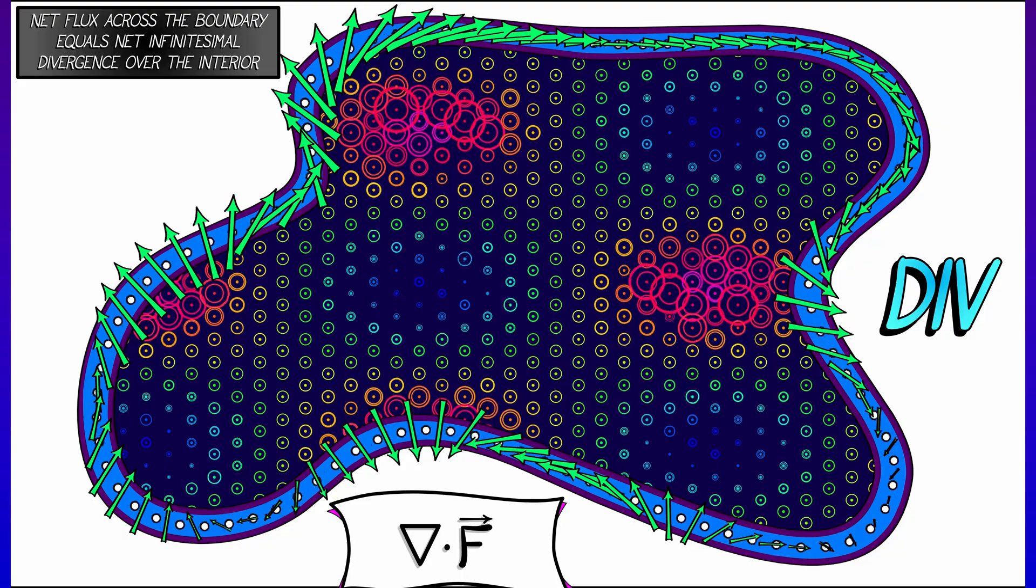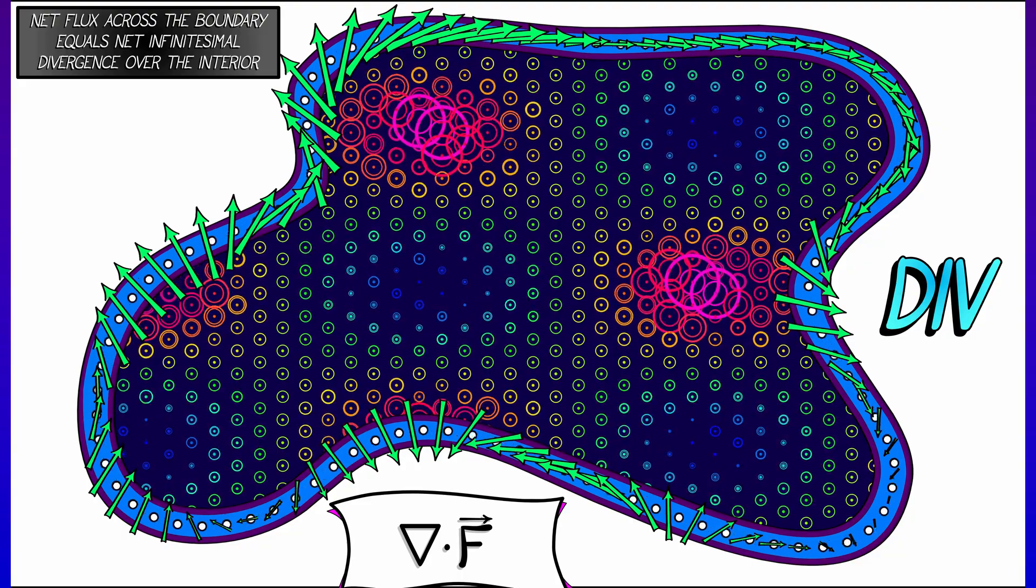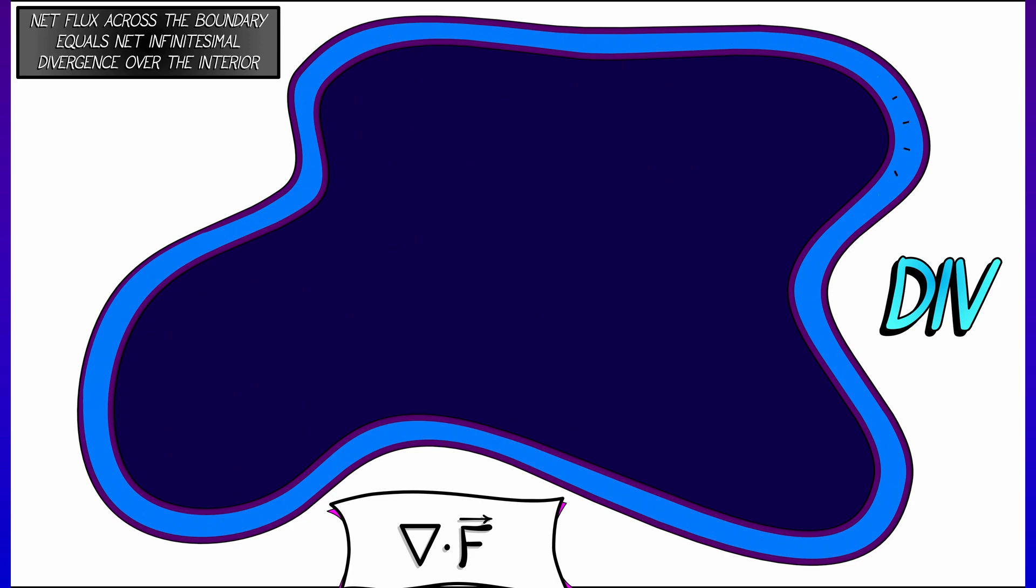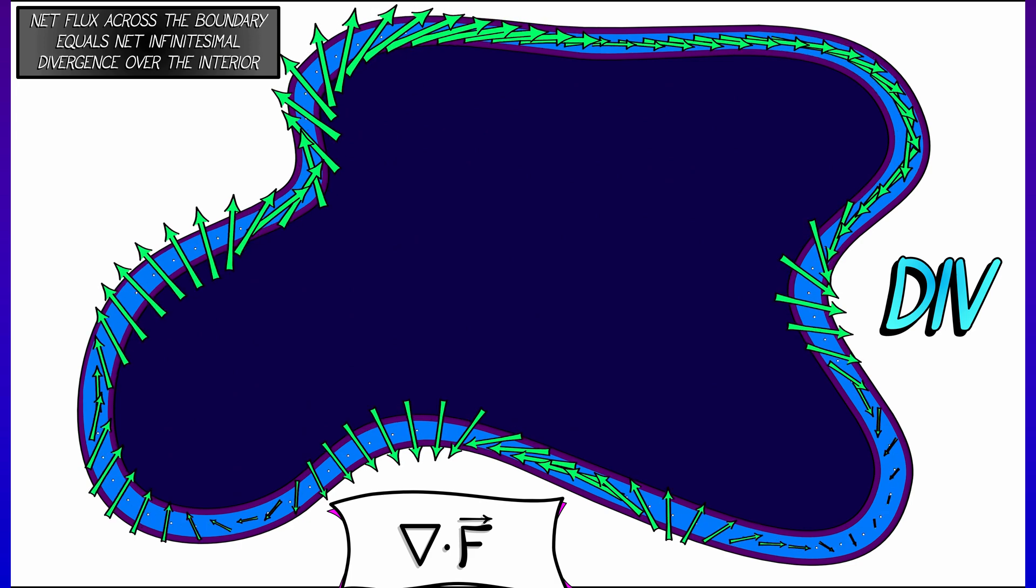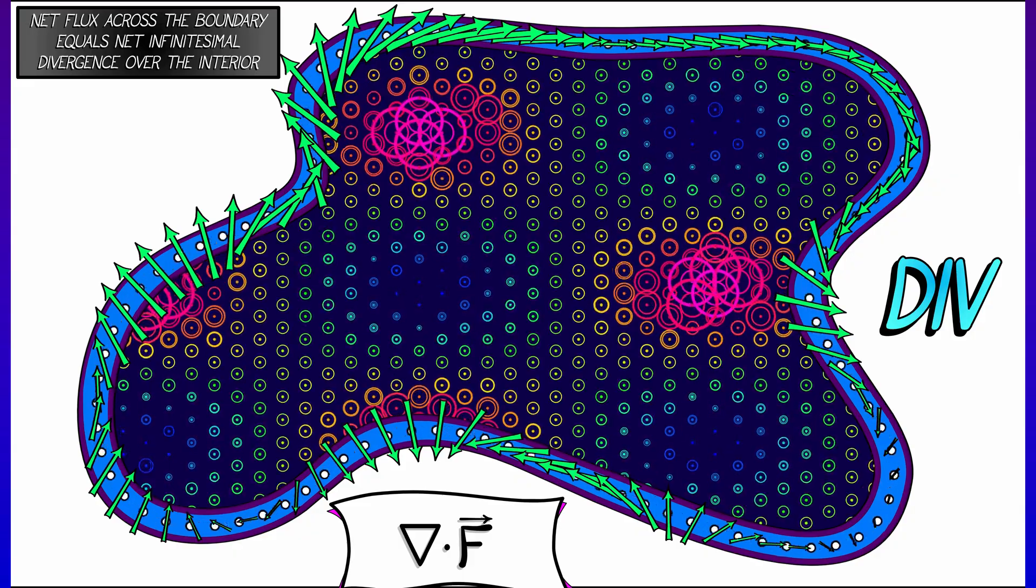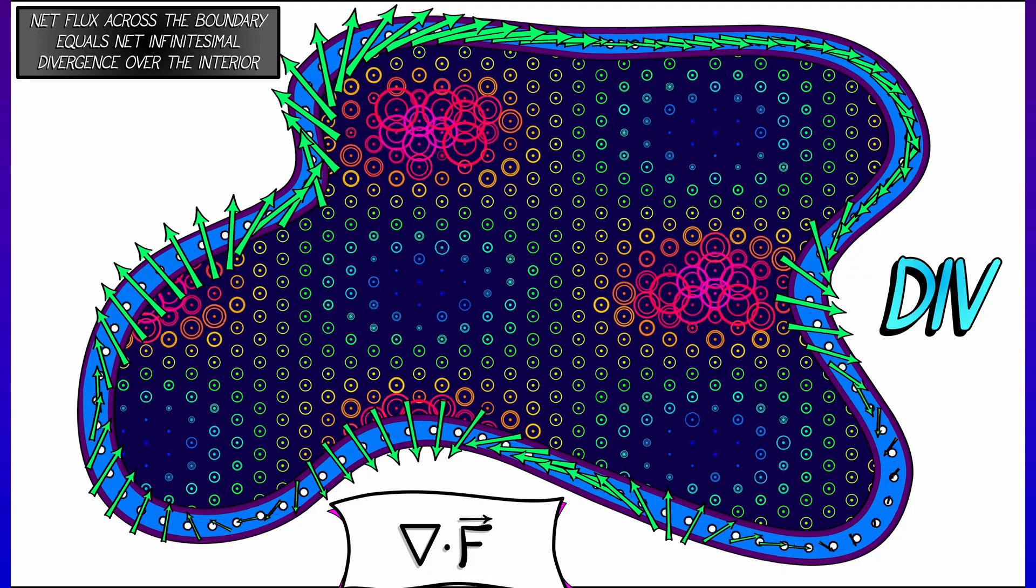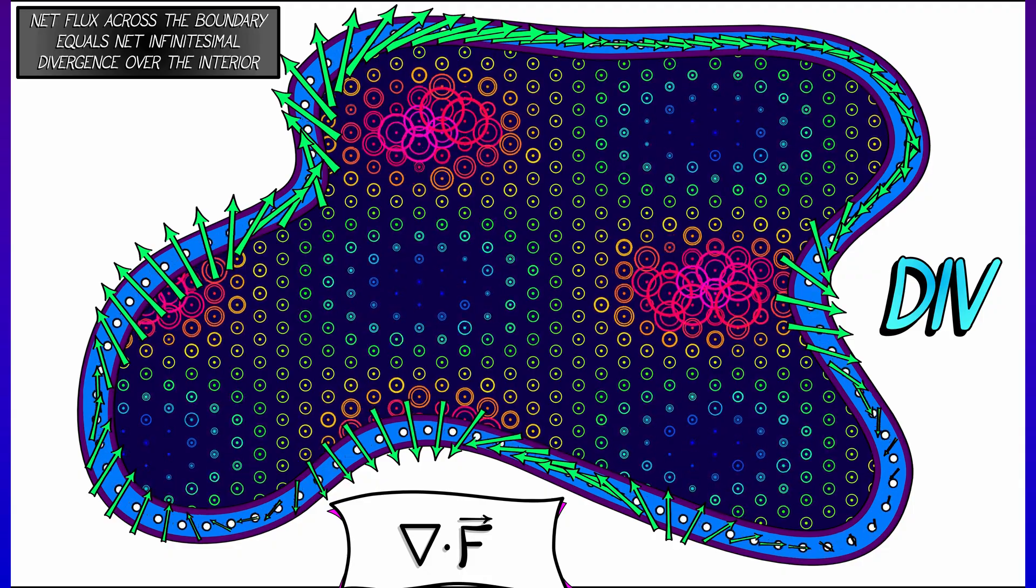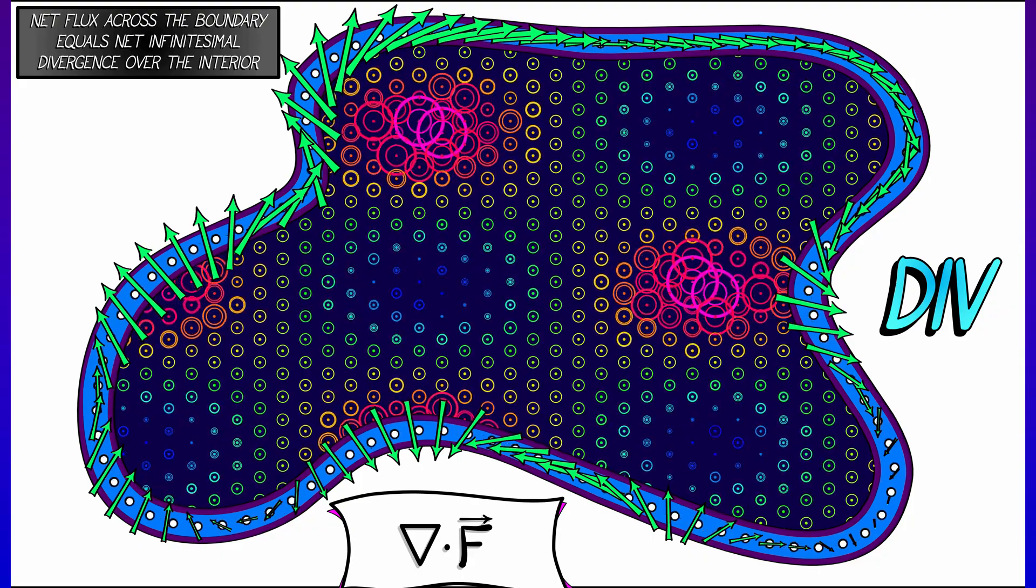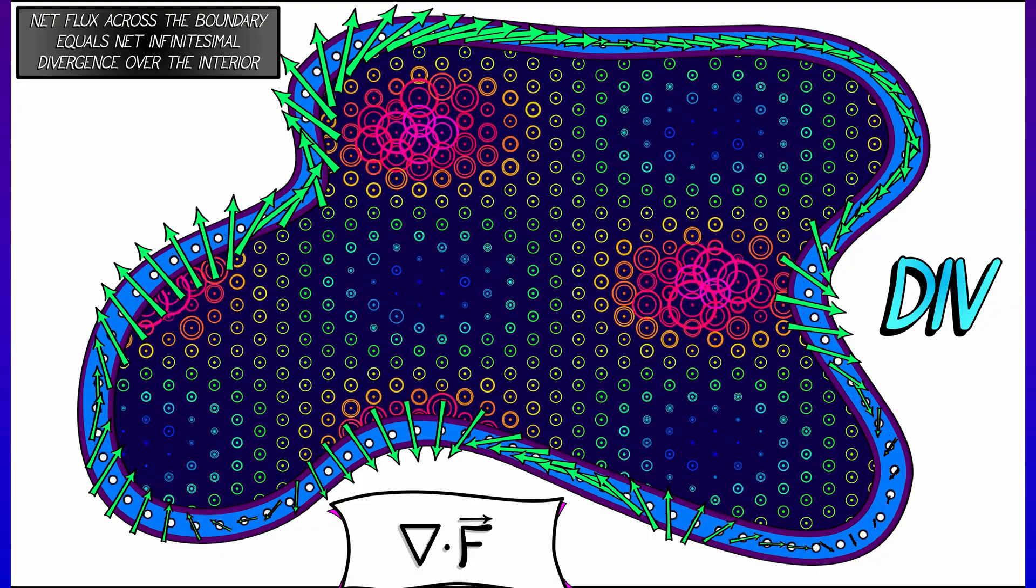That is, is the vector field locally expanding the area? That is positive divergence. Or is it locally contracting that area? That is negative divergence. Am I being pushed out or am I being sucked in? And what is happening over the interior affects the net amount of flux across the boundary. That is what Green's theorem means in the case of divergence.